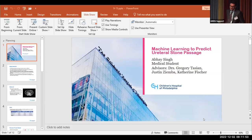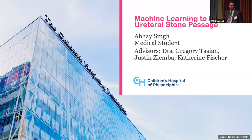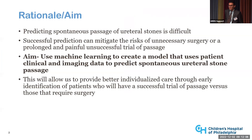I'm here to talk about machine learning to predict ureteral stone passage. Predicting spontaneous passage of ureteral stones is difficult. Successful prediction can mitigate the risks of unnecessary surgery or prolonged and painful unsuccessful trials of passage. For example, a patient might be operated on when the stone could have been passed spontaneously, unnecessarily exposing them to the risks of surgery and anesthesia.